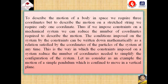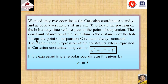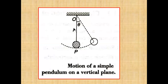Let us consider as an example the motion of a simple pendulum confined to move in a vertical plane. We need only two coordinates in Cartesian coordinates, x and y. In polar coordinates, the coordinates are r and theta. For the simple pendulum, we need two polar coordinates r and theta to locate the position of the bob at any time with respect to the point of suspension. The constraint of the pendulum is the distance l of the bob P from the point of suspension O, which always remains constant.